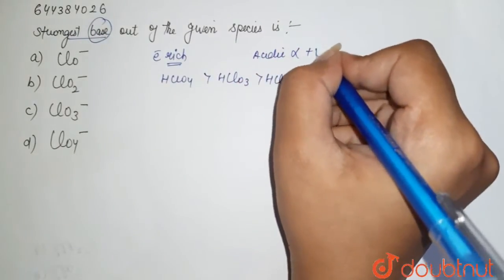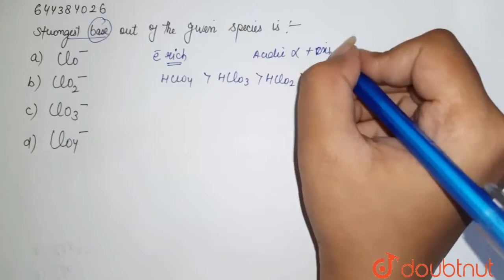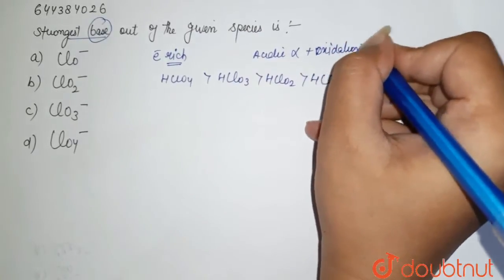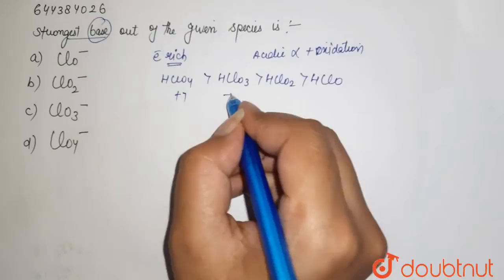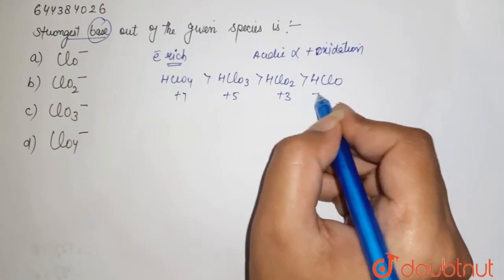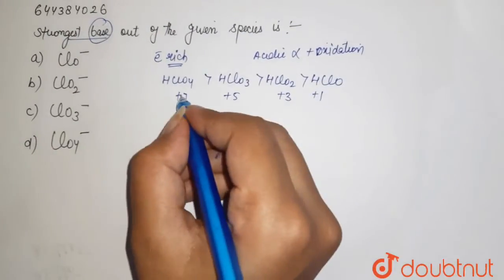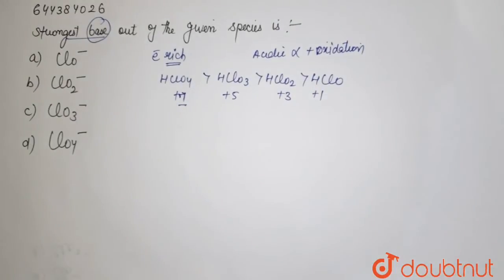Depends on your positive oxidation state. If you calculate the oxidation state over here, it is +7, +5, +3, and +1. So increasing order of your oxidation state reveals that this is your strongest acid.